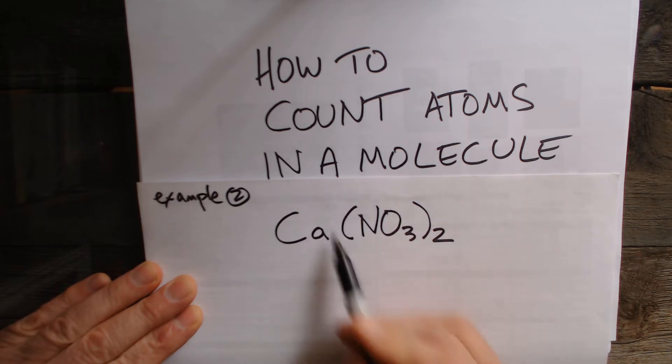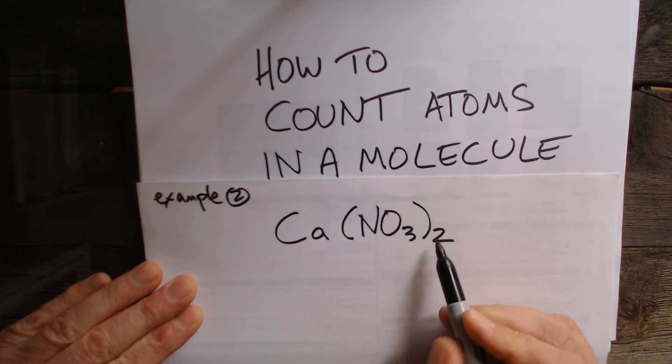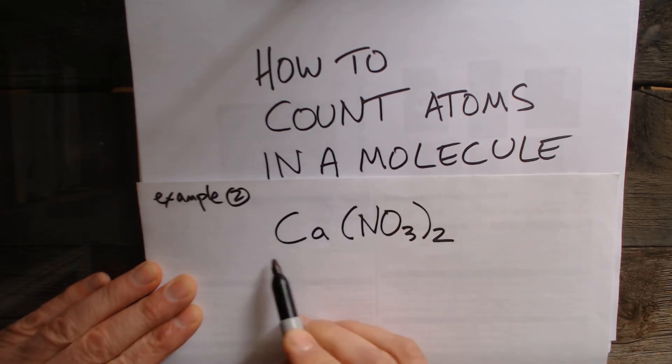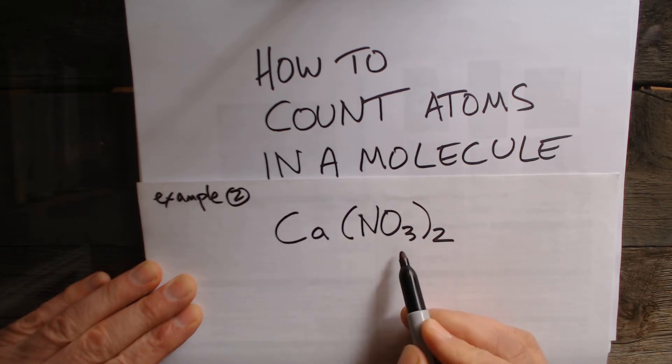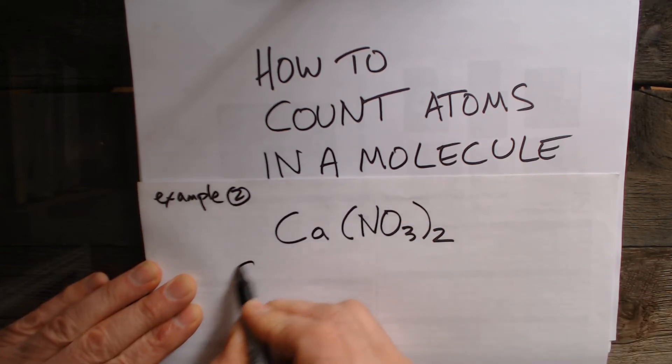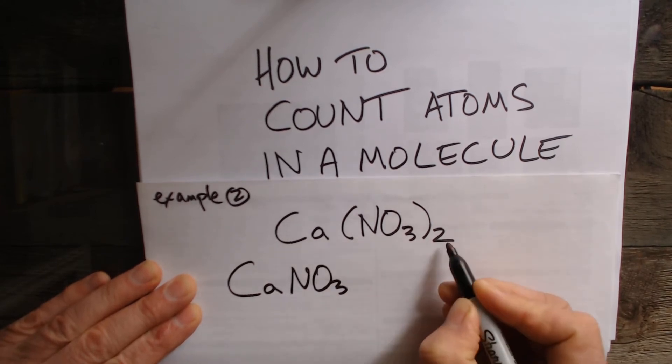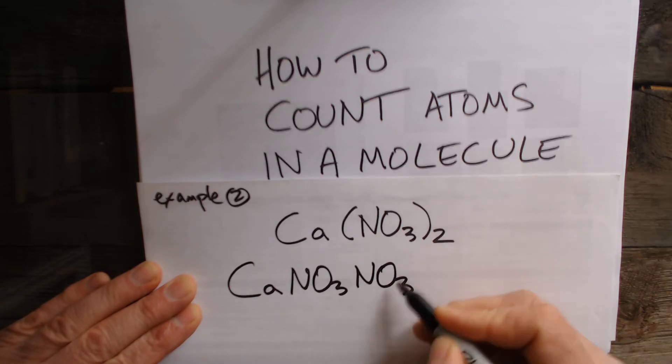So this is kind of always confusing to students at first because the 2 actually goes for the O and for the N. So essentially this means there's two of whatever's in the bracket. So you could have written this Ca NO3 and there's another NO3. So these are the same thing.